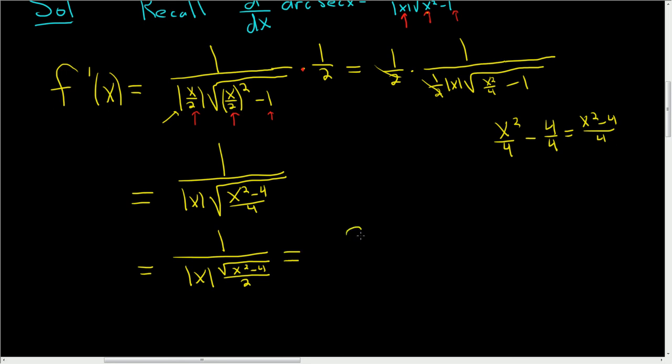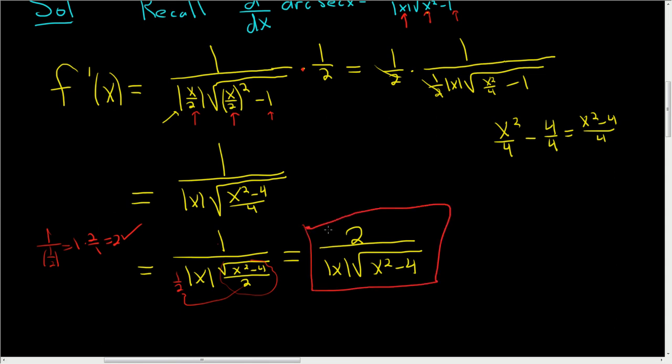So this equals 2 over the absolute value of x times the square root of (x squared minus 4). How did I get a 2 up top? You can really think of this 1/2 as being out here. So it's really 1 divided by 1/2. And when you have that, you multiply by the reciprocal. So it's 2. Kind of a sneaky problem. The simplification was not what I expected. I hope this helps.